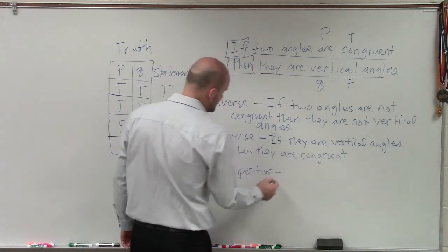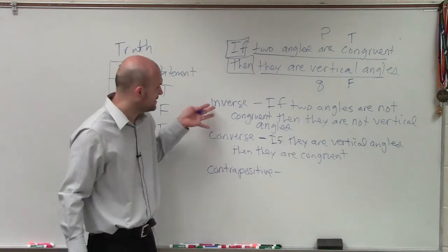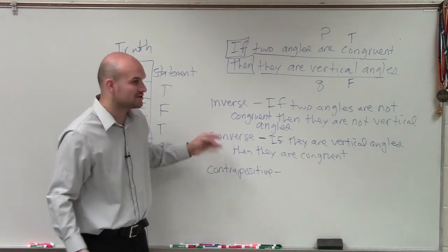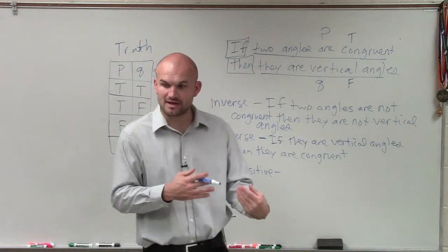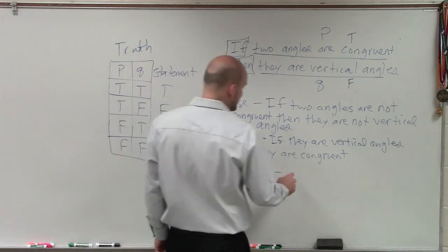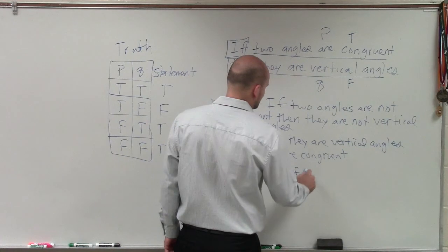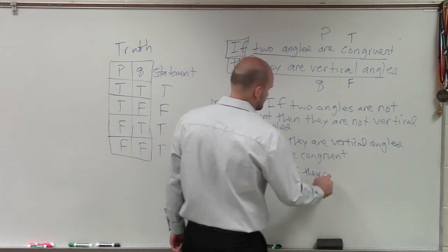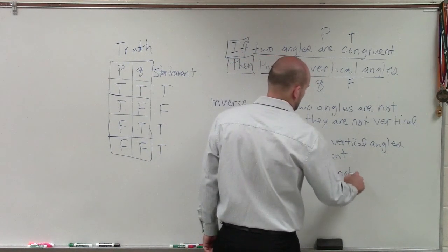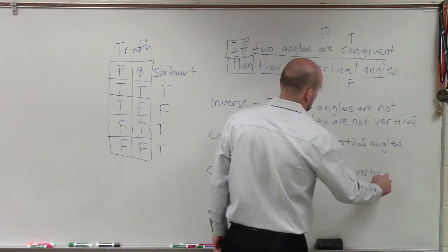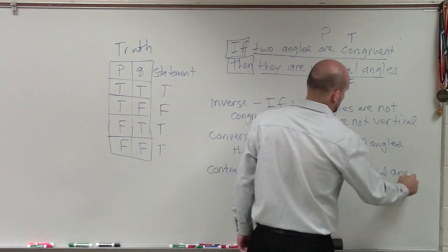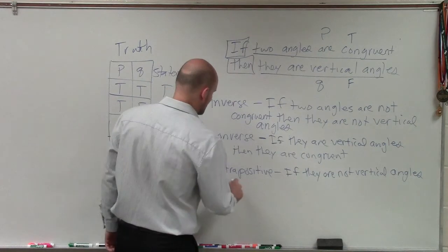And when you take the contrapositive, the contrapositive is a mixture of inverse and converse. You're taking the negation of both of them and you also swap them. So therefore, if they are not vertical angles, then they are not congruent.